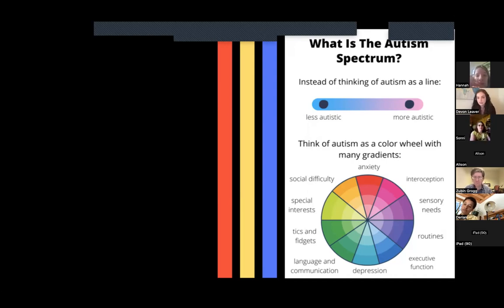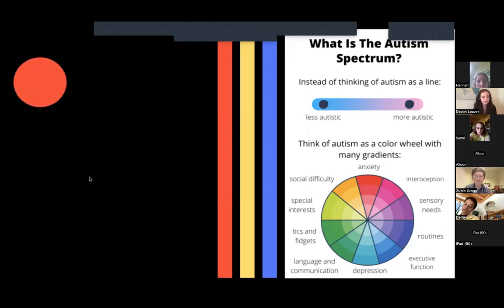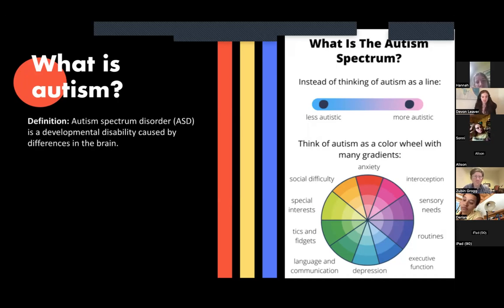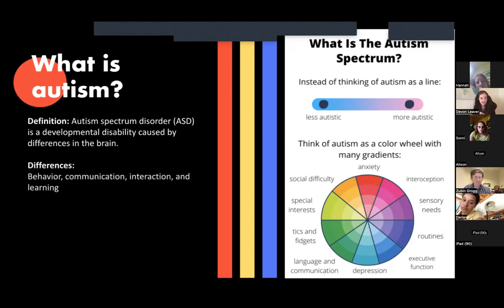I'd like to contextualize the film a little bit by giving you the definition of autism and walking through some fun facts about it for those of you that may not know. I know we have a couple autistic individuals in this chat. So first of all, what is autism? Autism spectrum disorder, or ASD, is a developmental disability caused by differences in the brain. These differences can manifest in a ton of different ways — behavior differences, communication, interaction, and even learning.